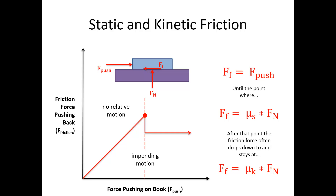Beyond the point of impending motion, the friction force often drops. Once the object is sliding, the friction force is mu kinetic times Fn — the larger the normal force, the larger the friction force. Mu static and mu kinetic are sometimes different numbers; when they differ, mu kinetic is always smaller than mu static. You can feel this intuitively: pushing a heavy box requires a lot of effort, but once it starts moving it's easier to keep it going than to start it.